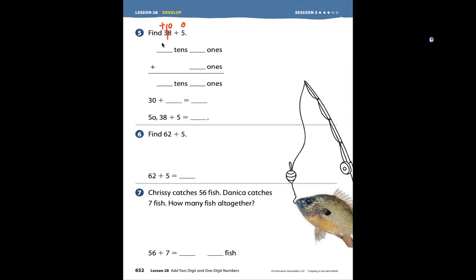38 is made of 3 tens and 8 ones, 38. And then we add 5 more ones.